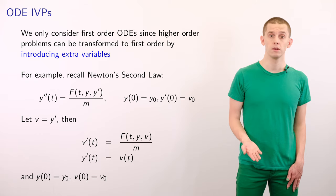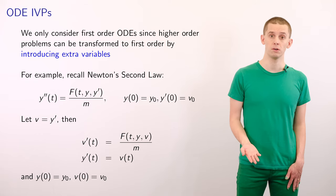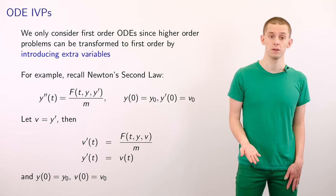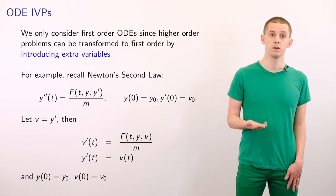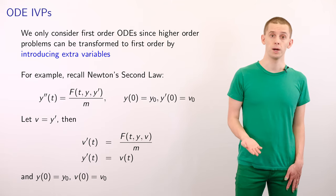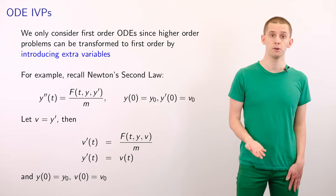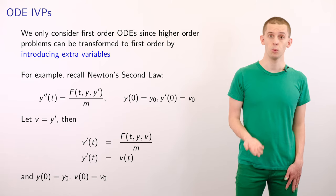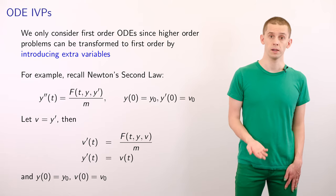And as an example, let's recall Newton's second law that we introduced previously. So we have that the acceleration, y double prime of t, is equal to our force, f of t, y and y prime, divided by our mass m.